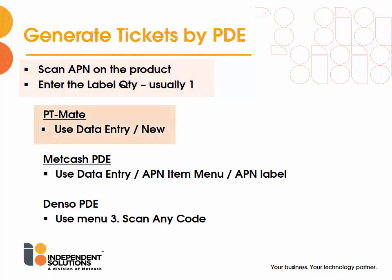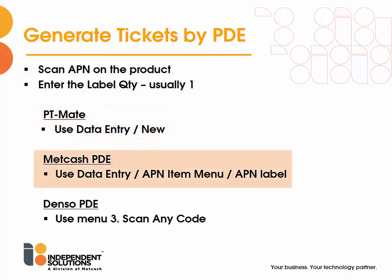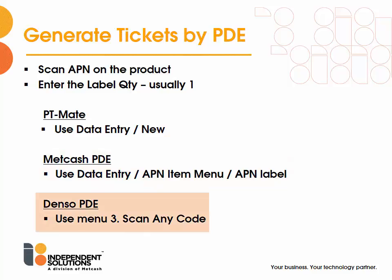If you are using PT Mate, the menu path is Data Entry and then New. If you are using a Metcash PDE, use Data Entry, APN Item Menu and then APN Label. And for Denso PDEs, use Menu 3, Scan Any Code.